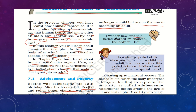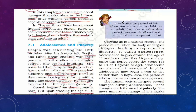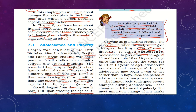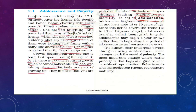Bujo wondered how long this period of bodily changes would last. Paheli said it is a strange period when you are neither a child nor an adult. Growing up is a natural process. The period of life when the body undergoes certain changes leading to reproductive maturity is called adolescence. Adolescence begins around the age of 11 and lasts up to 18 to 19 years of age. Since this covers the teen years — 13 to 18 or 19 — adolescents are also called teenagers.